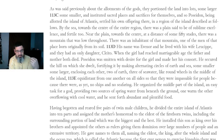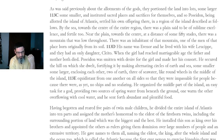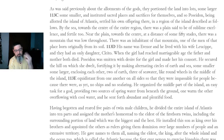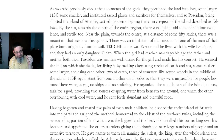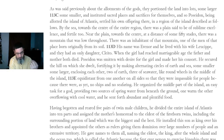His name was Evanor. He lived with his wife Lusippe and they had an only daughter, Cleeto. When the girl had reached marriageable age, the father and mother both died. Poseidon was smitten with desire for the girl and made her his consort. He secured the hill on which she dwelt, fortifying it by making alternating circles of earth and sea — two of earth, three of seawater — like round wheels in the middle of the island, equidistant from one another on all sides. He organized the middle of the island, providing two sources of spring water from beneath the ground, one warm, the other overflowing with cold water, and he sent forth abundant and plentiful food.